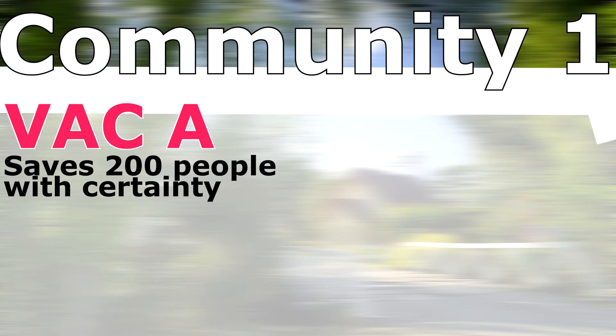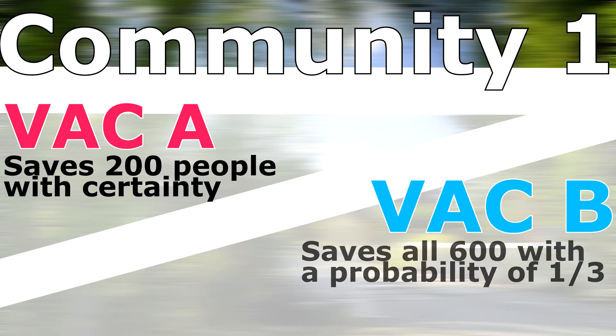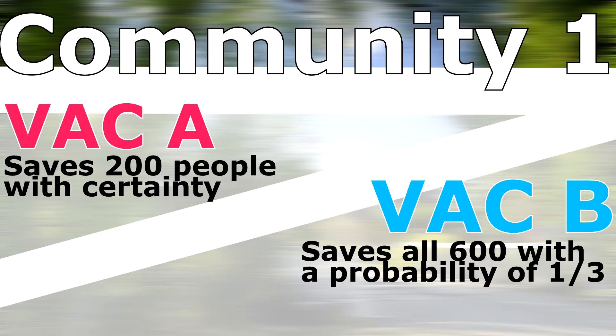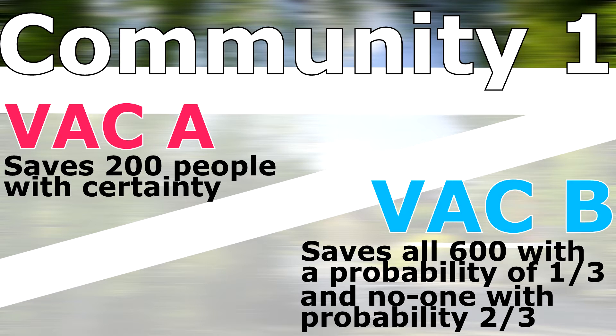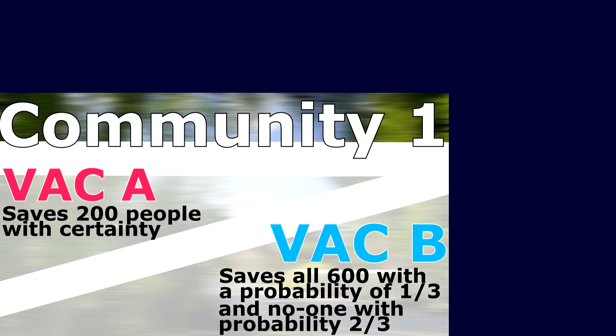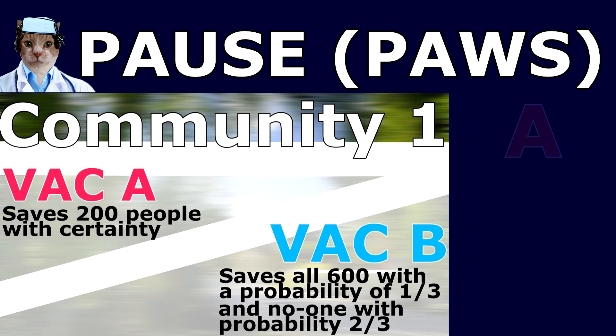For the first community, you face a decision between vaccines that will lead to the following outcomes. VAC A will save 200 people with certainty. VAC B will save all 600 people with a probability of one third, and save no one with a probability of two thirds. As the resident doctor, which vaccine would you choose?